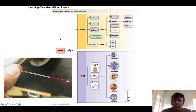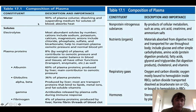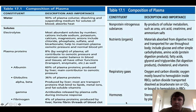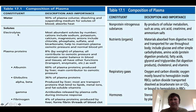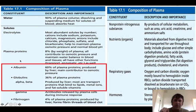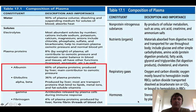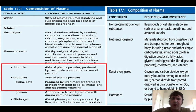Blood plasma transports hormones — chemical messengers — around the body. Its components include electrolytes like sodium, potassium, and magnesium; plasma proteins including albumins and globulins; clotting proteins; waste substances; nutrients; gases; and signaling molecules. The vehicle for delivering nutrients and chemical signaling molecules to cells, and removing metabolic waste, is blood plasma specifically.